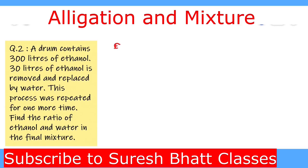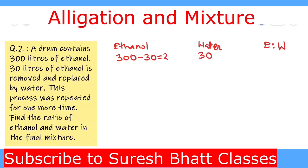We write columns for ethanol quantity, water, and ratio of ethanol to water. Originally we had 300 liters of ethanol. After removing 30 liters of ethanol and replacing with water, we have 270 liters of ethanol and 30 liters of water. The ratio is 270:30, which simplifies to 9:1.